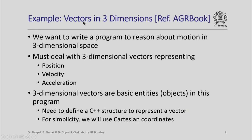The specific example we are going to consider in this lecture is about vectors in three dimensions, and this is from the AGR book. In this example we want to write a program to reason about motion in three-dimensional space, so we must deal with different kinds of three-dimensional vectors — for example, vectors representing position, velocity, acceleration, and so on. Three-dimensional vectors are going to be basic entities or objects in our program.